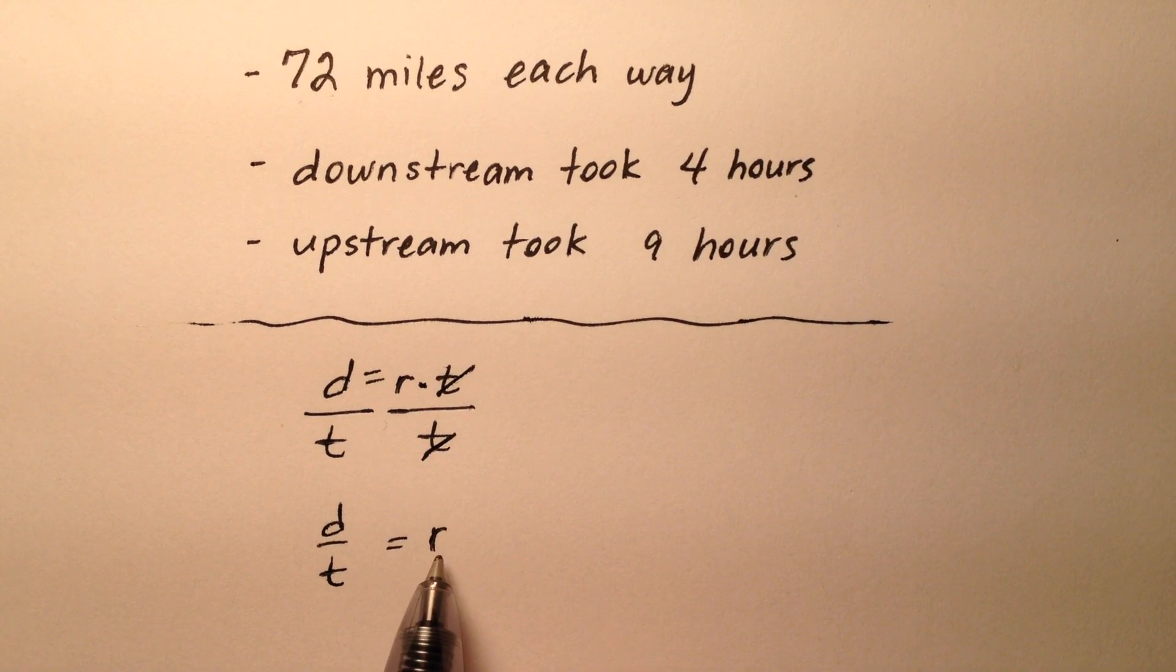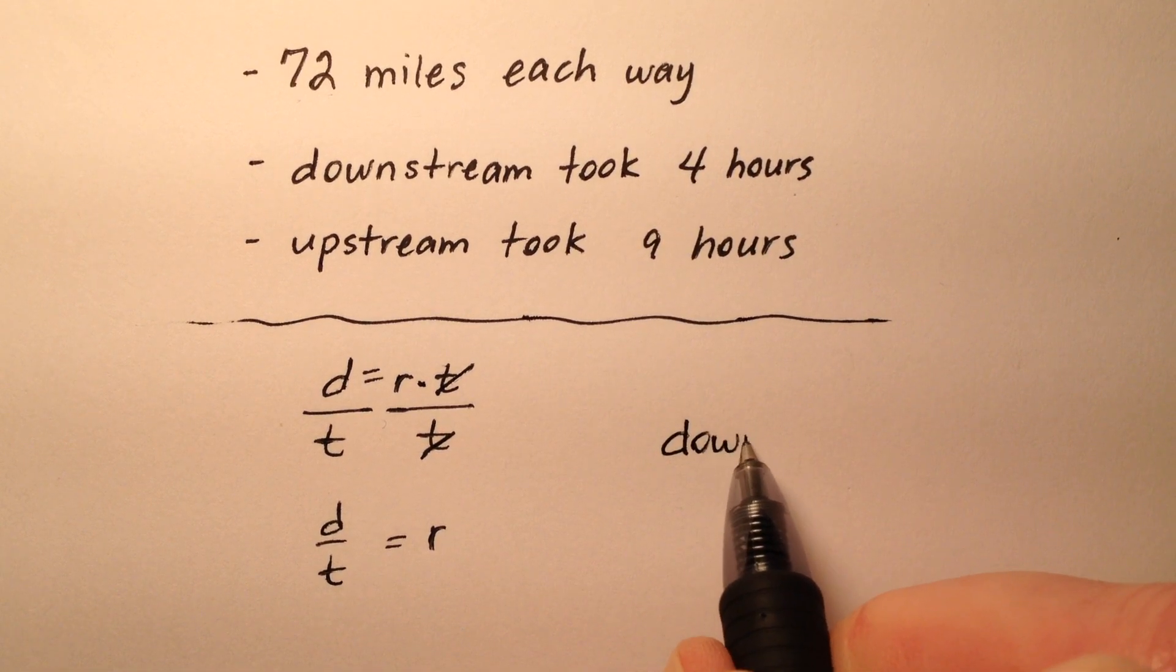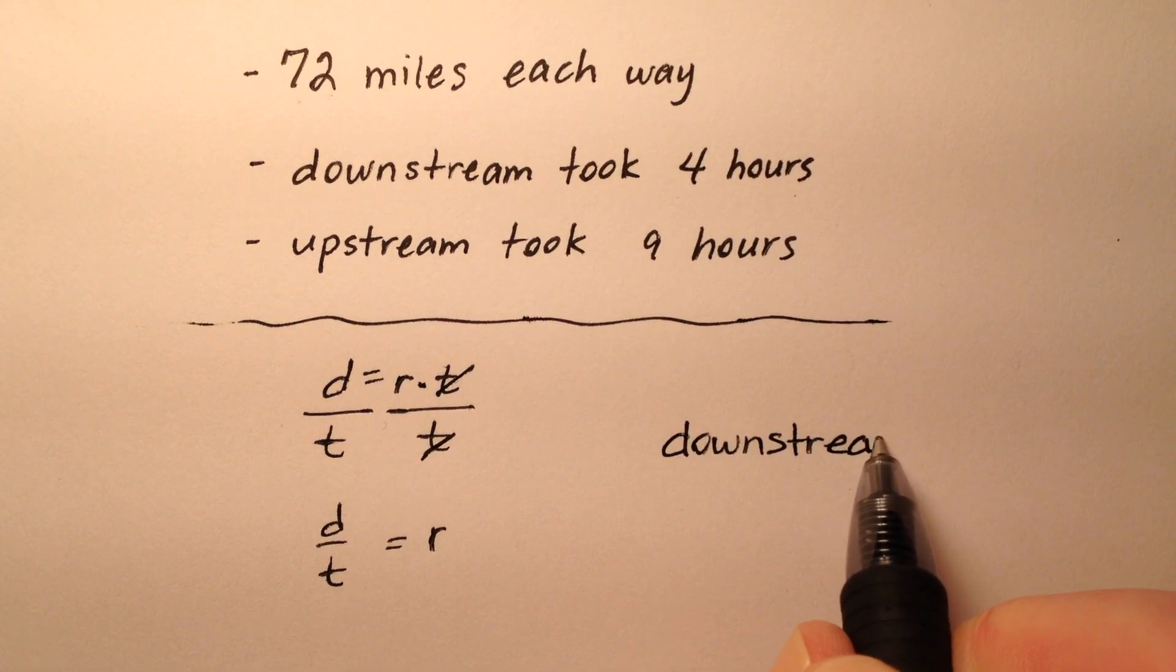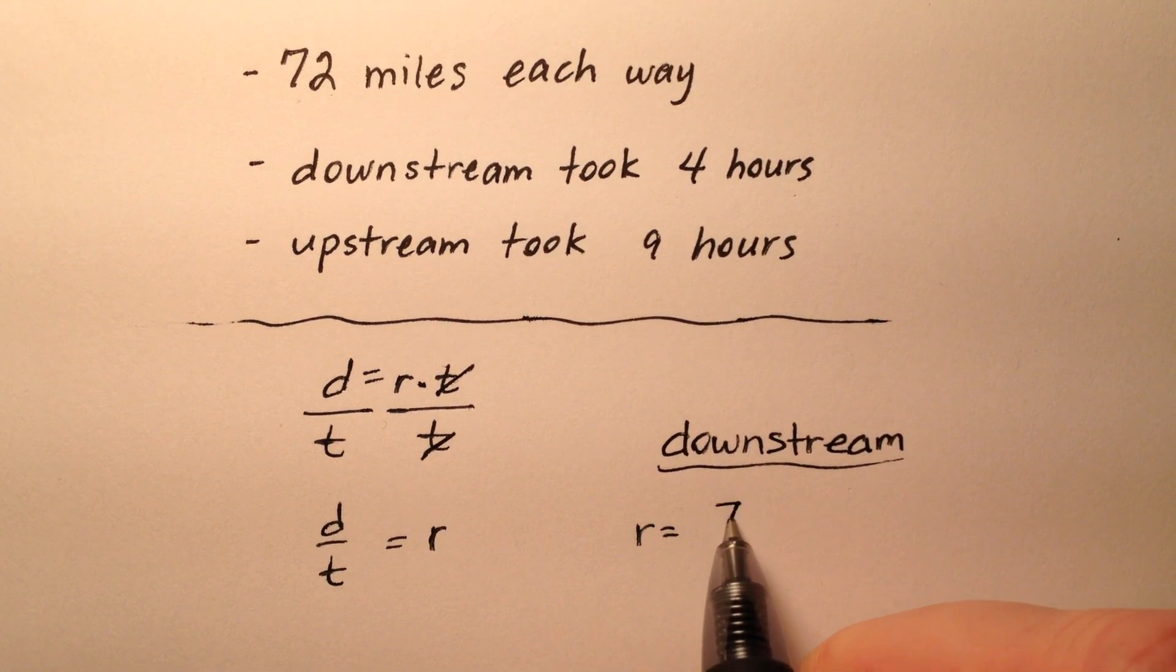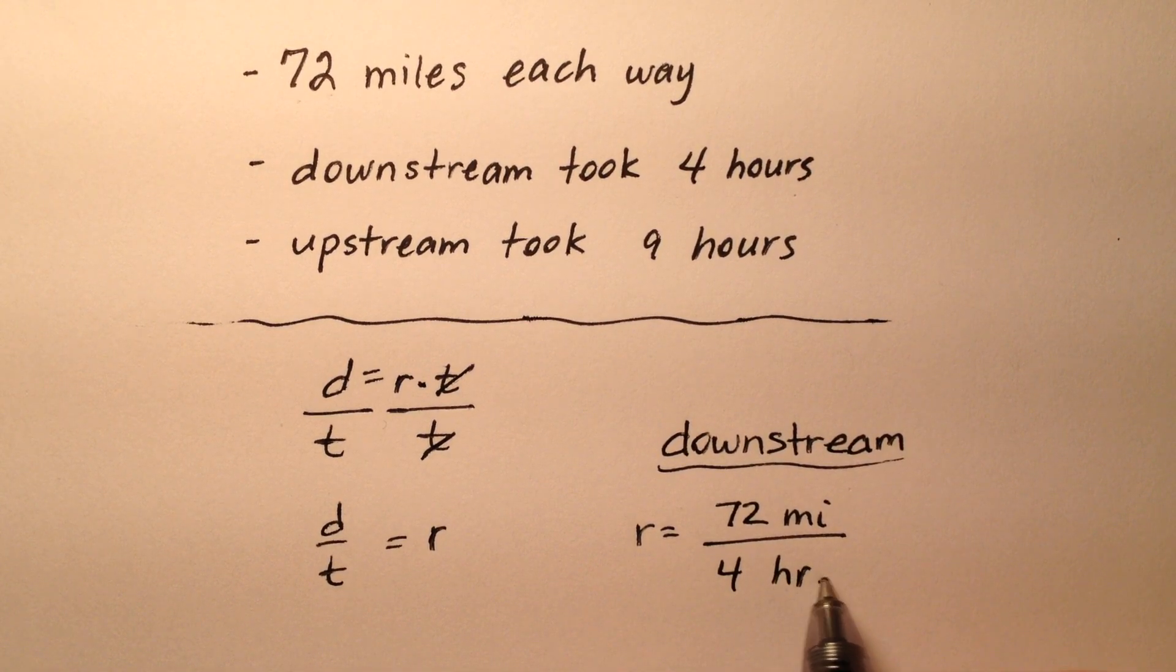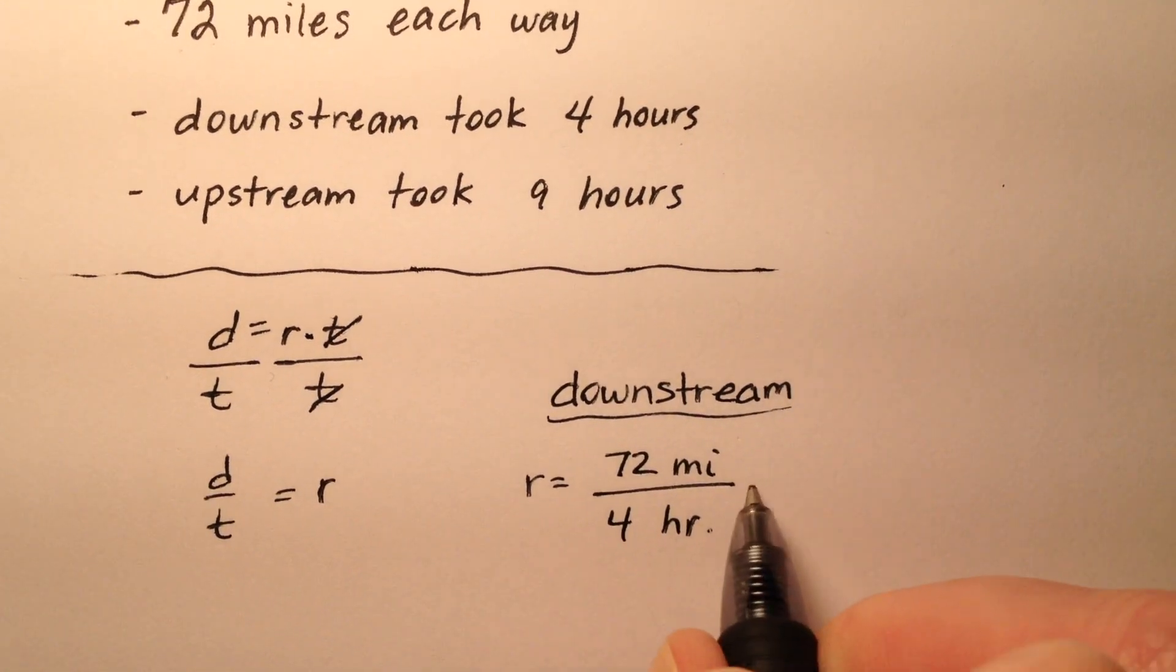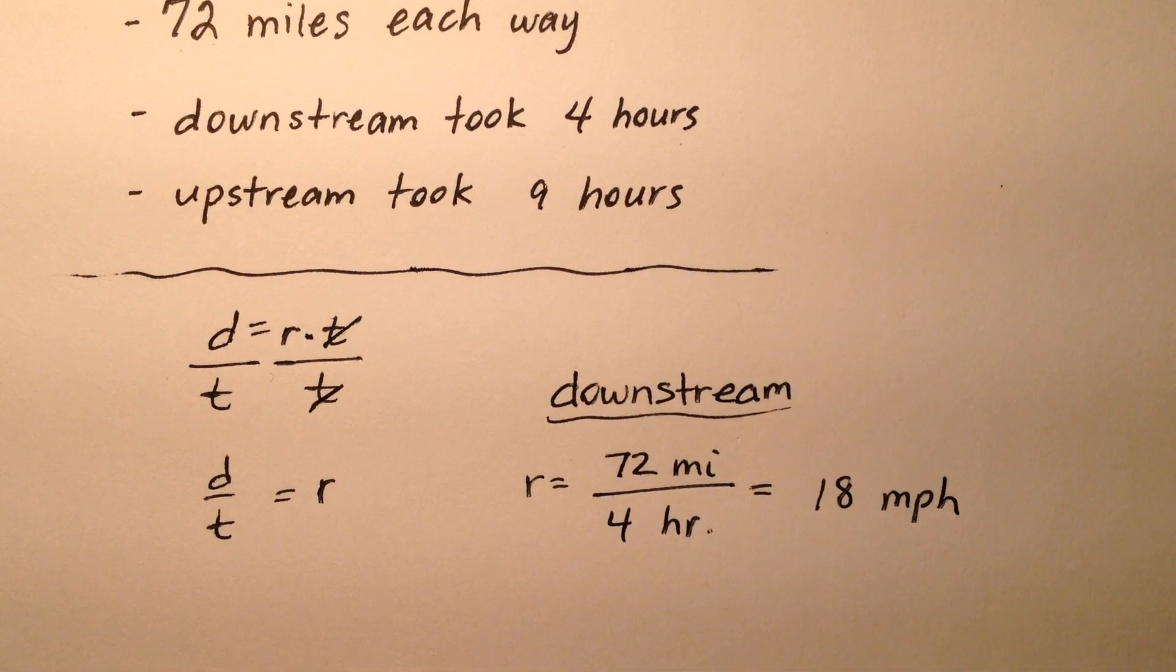So we know that the average rate is going to be the distance divided by the time. So downstream, let's talk about that one first. So downstream, the rate was 72 miles divided by 4 hours. So that average rate looks like 18 miles per hour.